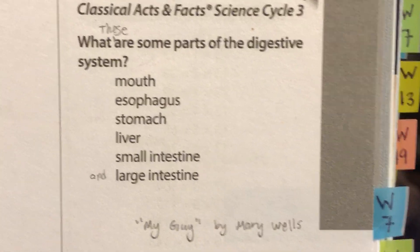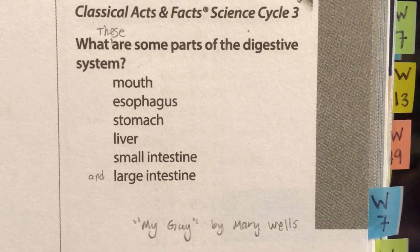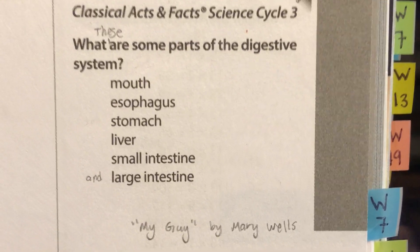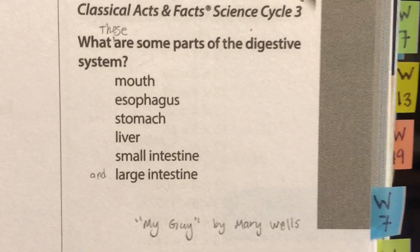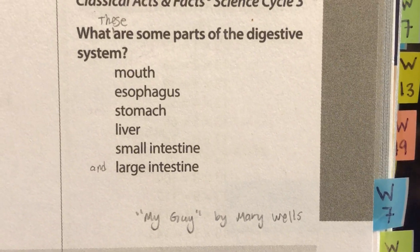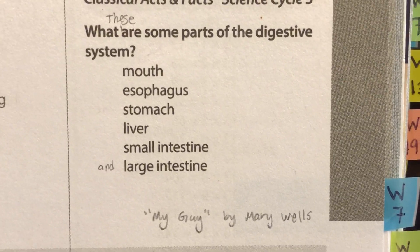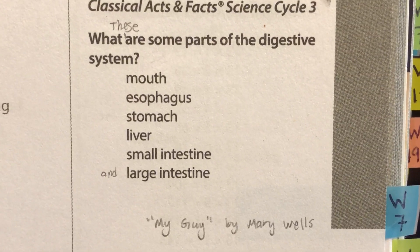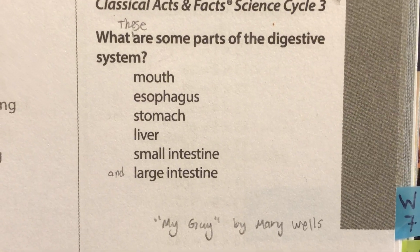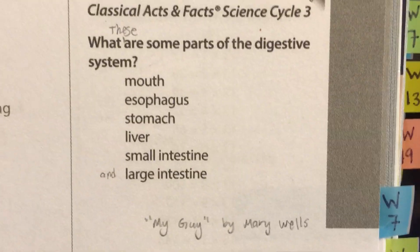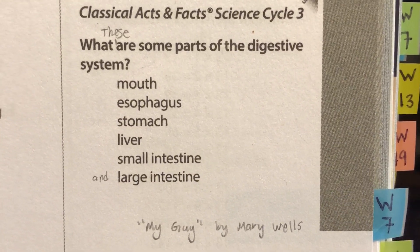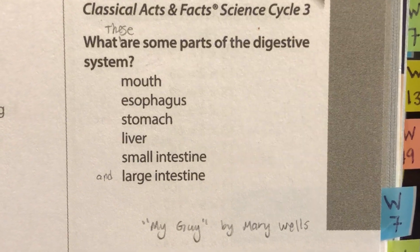What are some parts of the digestive system? These are some parts of the digestive system. Mouth, esophagus, stomach, liver, small intestine, and large intestine. These are some parts of the digestive system.